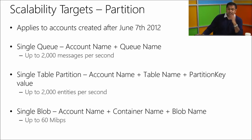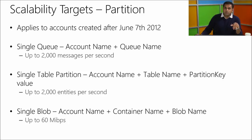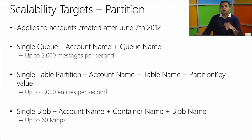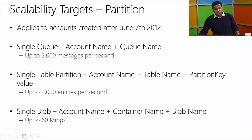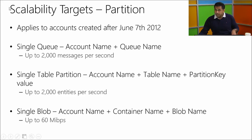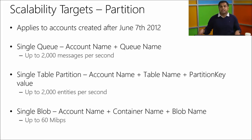Table scans are expensive because it's the entities we look up on the service end — not just the entities returned — that count toward your targets. For tables, a single partition is account name, table name, and partition key, giving you the option of choosing your partition key value to match your scale targets. A single blob — account name, container name, blob name, and all its snapshots — belongs to the same partition and can serve up to 60 megabits per second.